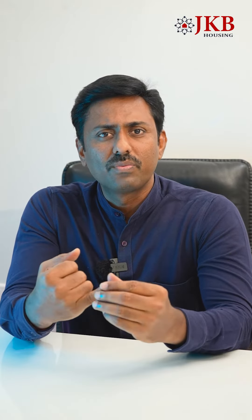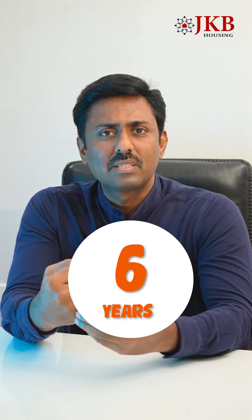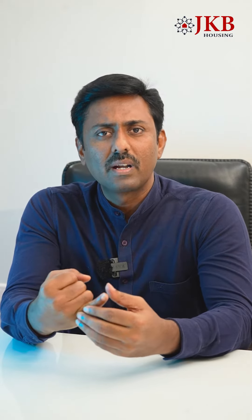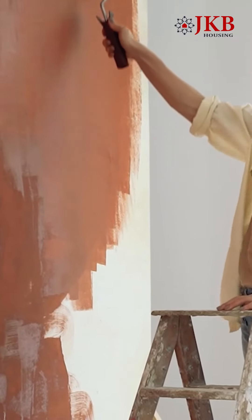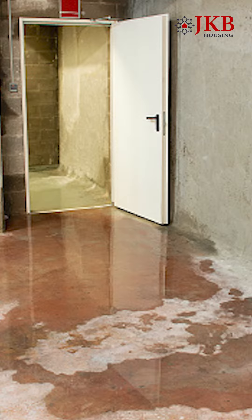How do we do this? Every 5 or 6 years, we have to carry out repairs on the apartment. We also have to address stagnation issues in the apartment.